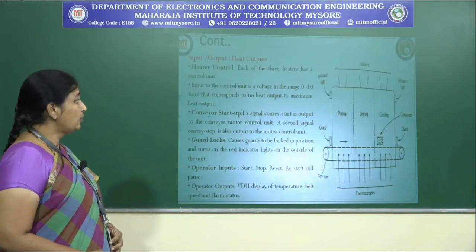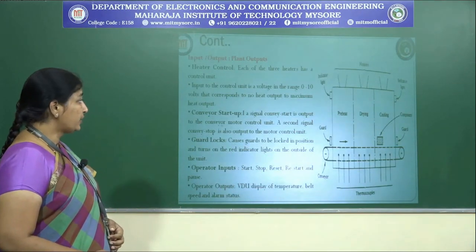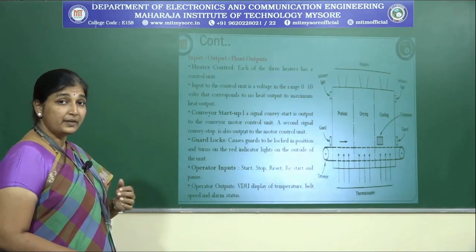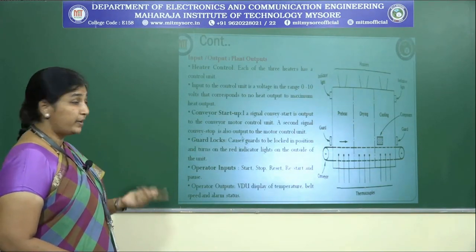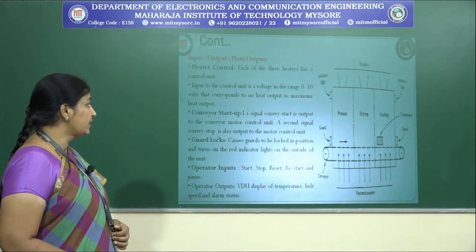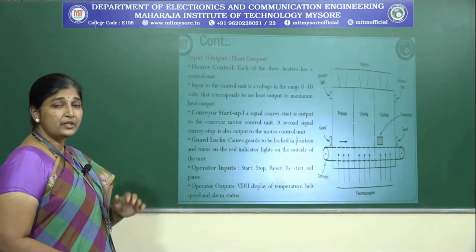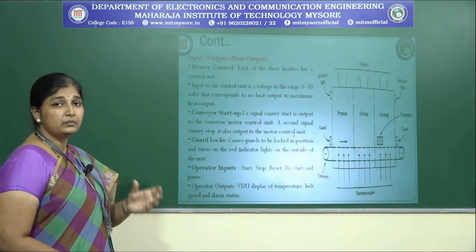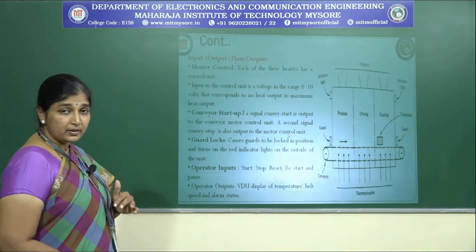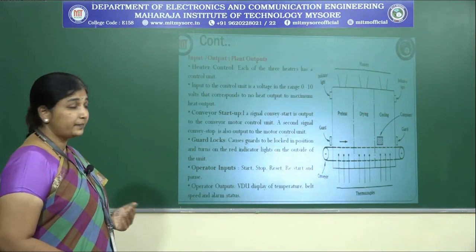For conveyor startup, if a start signal is sent to the conveyor motor control unit, the start signal goes high and the motor begins operating. For the stop signal, if a conveyor stop command is given, the output of the motor unit will stop. So signal one is for motor on and signal two is for motor off.